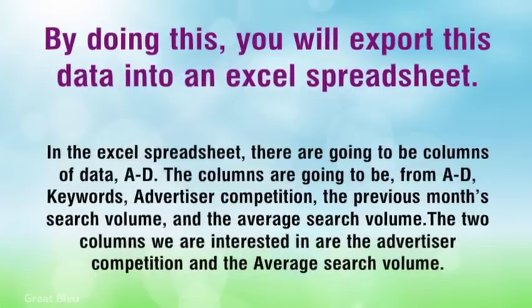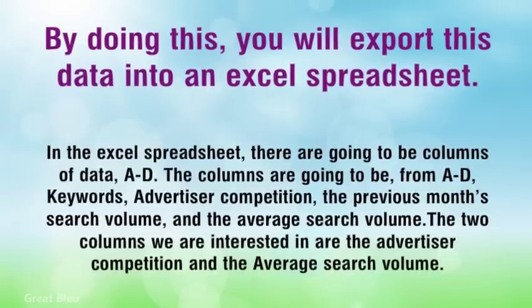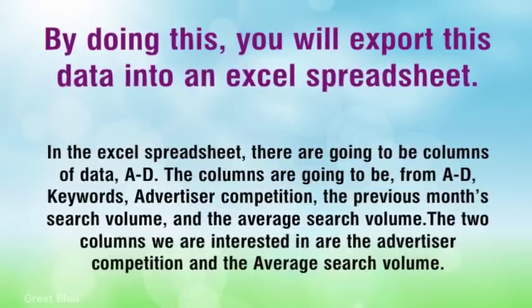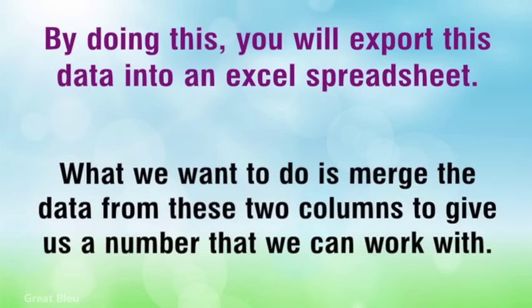In the Excel spreadsheet, there are going to be columns of data. The columns are going to be A through D: keywords, advertiser competition, the previous month's search volume, and the average search volume. The two columns we are interested in are the advertiser competition and the average search volume. What we want to do is merge the data from these two columns to give us a number that we can work with.